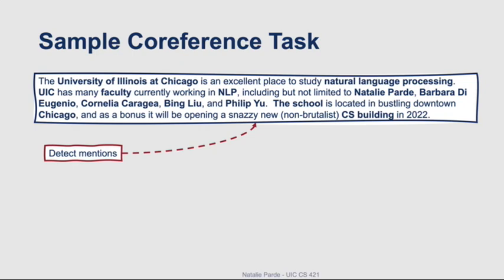We can use named entity recognition to perform mention detection, and we can also build things like referentiality classifiers. So we detect mentions, and as you can see here, we end up with mentions like University of Illinois at Chicago, Natural Language Processing, UIC, etc.